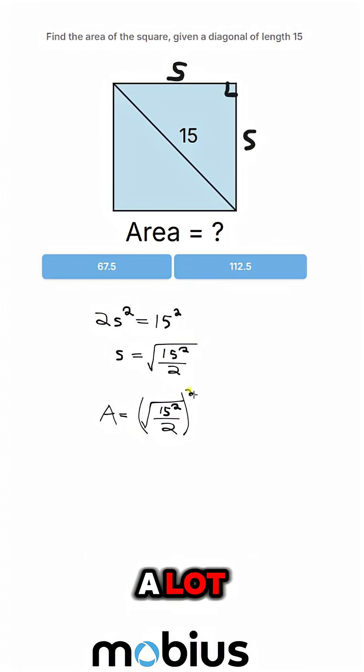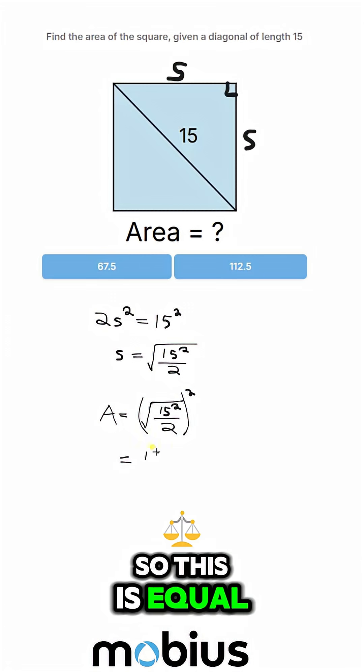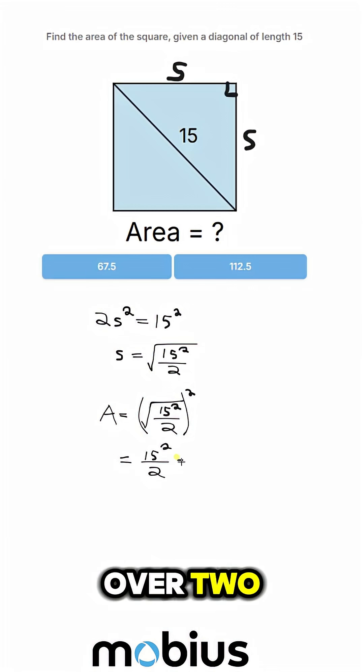And that simplifies a lot because we've got a square root squared. So this is equal to just 15 squared over 2.